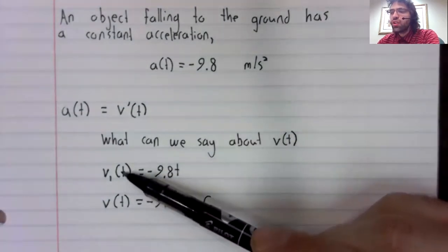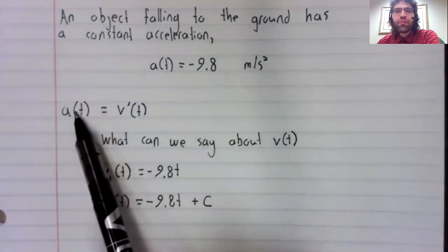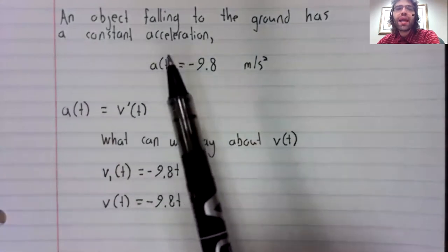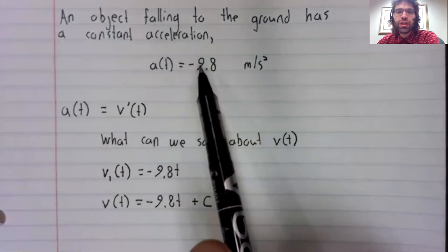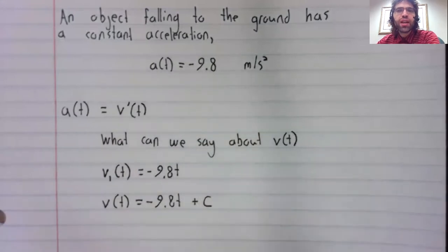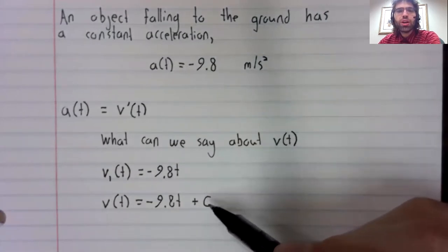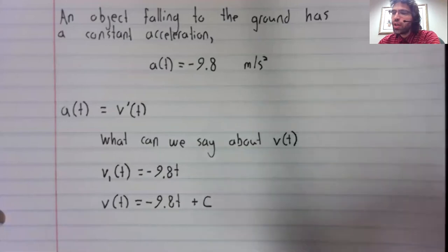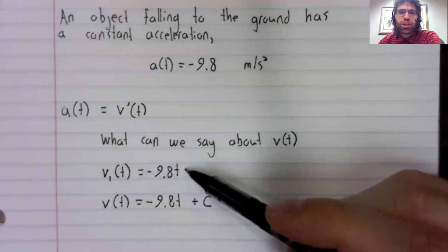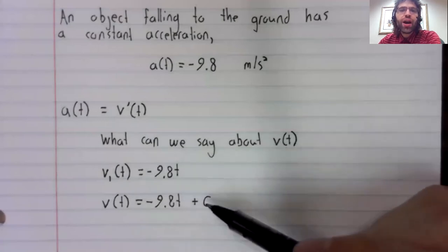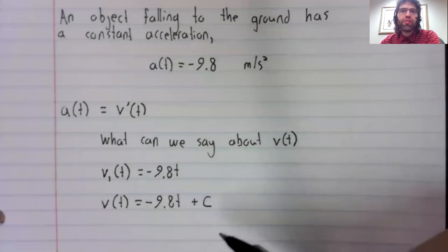Because this velocity function and this velocity function have to have the same derivative, they have to have negative 9.8 as their derivative. And if two functions have the same derivative, they're the same except for a constant. So once we found a velocity function, we were able to use that to find every possible velocity function.